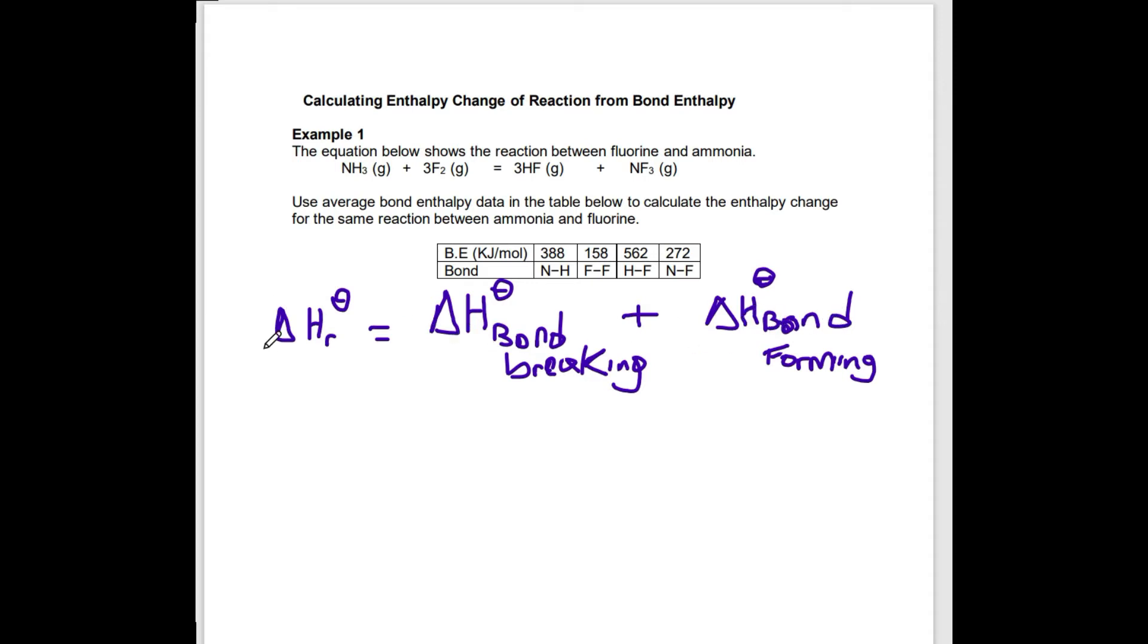Basically, your enthalpy change of reaction equals bond breaking plus bond forming. But the enthalpy change for bond forming is negative because to break a bond we have to add energy to the system—that process is endothermic. But when you form bonds, energy is released, so that is exothermic.